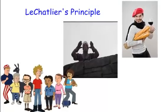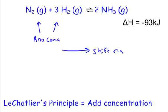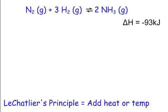Let's take a look at Le Chatelier's principle, from a French scientist named Le Chatelier. It says that if you change something at equilibrium, the system will shift to compensate for it. The first thing is adding concentration. If we add concentration of the reactants, it will shift to the right, making more products. If we add concentration of the products, it will shift to the left, making more reactants. Similarly, if we remove concentration from the reactants, it will shift to the left to bring it back to equilibrium.